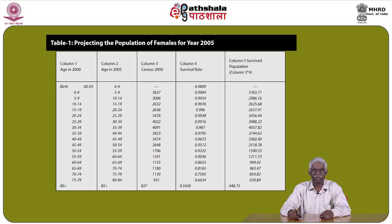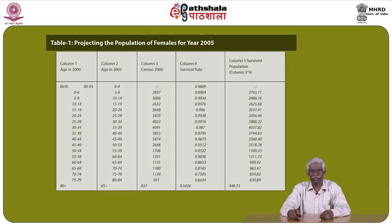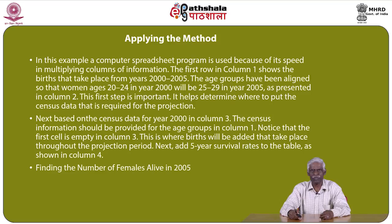Column 1 refers to age in the year 2000, column 2 to age in 2005, column 3 to census 2000 data, column 4 to survival rates, and column 5 is the survived population obtained by multiplying columns 3 and 4. The data depicts various calculations and results across different age groups. A computer spreadsheet program is used in this example because it speeds up multiplication of column information.